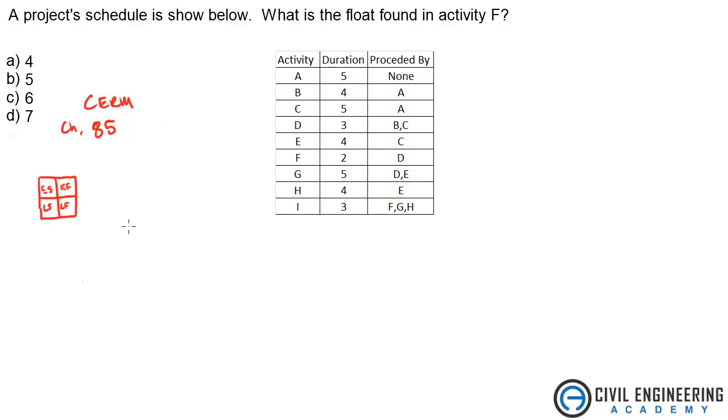So what we need to do is for every one of these activities we fill this out, and we need to figure out how to go forward pass and then come back when we're done and figure out what the float is. Now float equals the LF minus the EF, or the LS minus the ES.